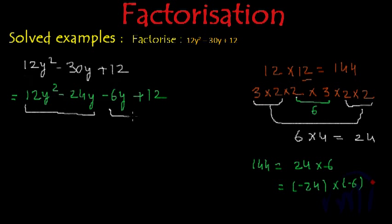So this will be the first group and this will be the second group. So from first group we can take 12y common and inside the bracket we will have y minus 2. Similarly from the next group if I take minus 6 common again inside the bracket I will have y minus 2.